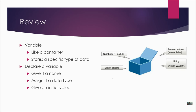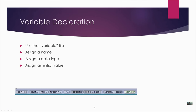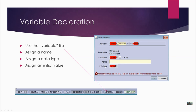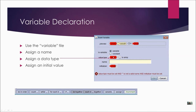To declare a variable, you're going to give it a name, assign it a data type, and give it an initial value. For your variable declaration, you're going to use the variable tile that you find at the bottom of the screen in Alice. When you click on it or drag it up into your program, you're going to get a dialog box where you assign it a name, pick the data type, and give it an initial value.